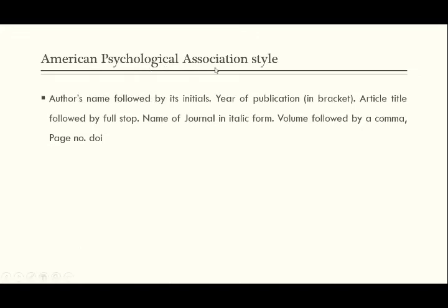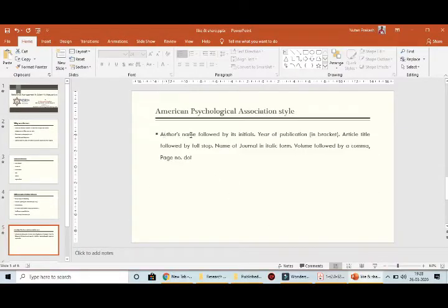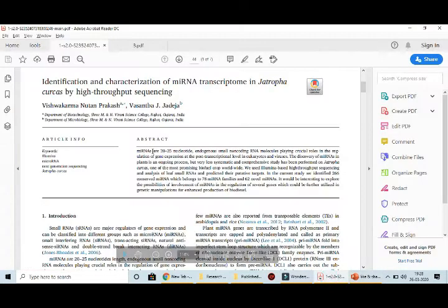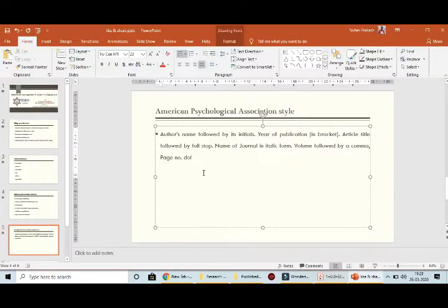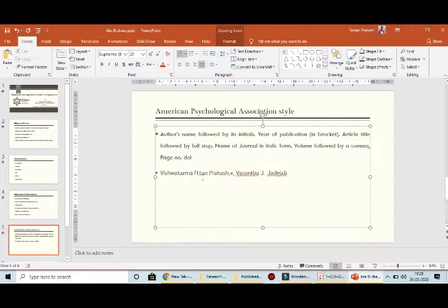In the American Psychological Association style, you should write down the author's name followed by the year of publication in brackets. Let me write down the reference. The author's name — I just copy the author's name and will write down the reference of this paper like this.